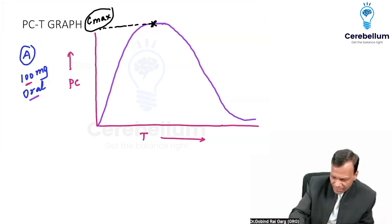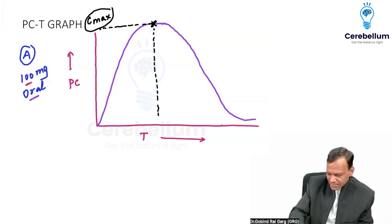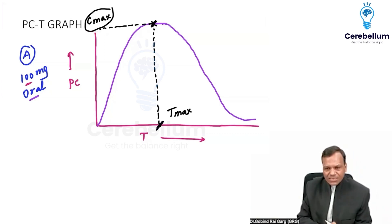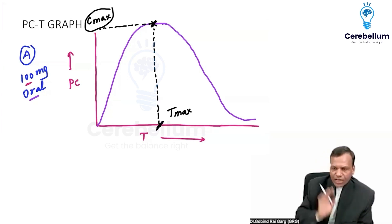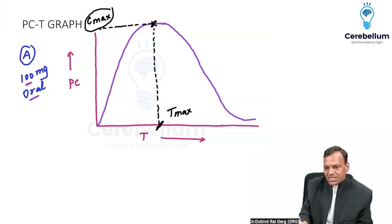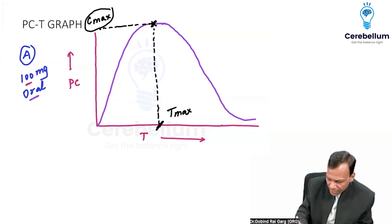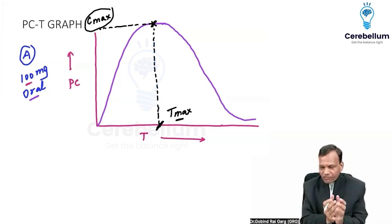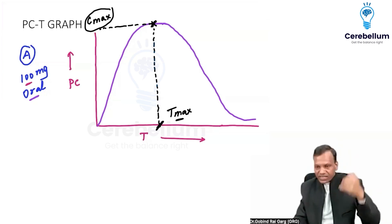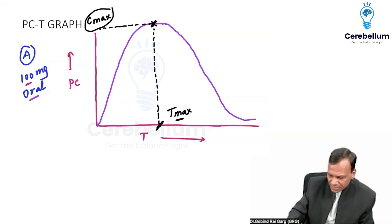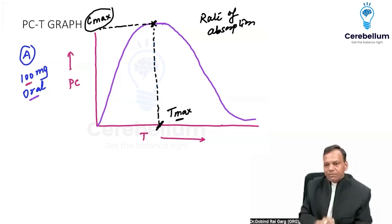On the other hand, if we extrapolate the peak point on the x-axis, this is called Tmax. Tmax means the time at which we get the maximum concentration. Tmax will be lower if absorption is quick — agar jaldi absorb ho jayega, to Tmax will be lesser because the drug reaches maximum concentration quickly. So Tmax tells about the rate of absorption.